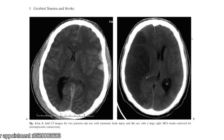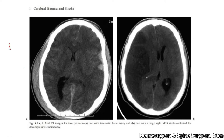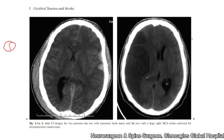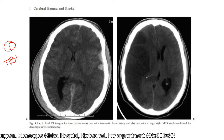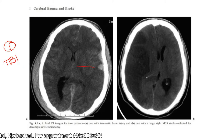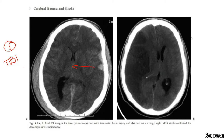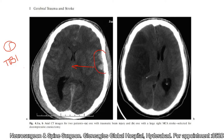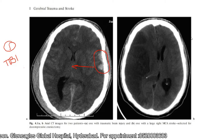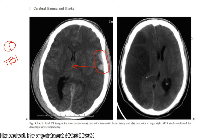There are two classical indications for decompressive craniectomy. The first indication is traumatic brain injury, where the midline shift is more than 0.5 mm, there are signs of uncal herniation, and there is obliteration of the basal cisterns. In this picture, you can see a traumatic brain injury with a small hemorrhage in the right frontal hemisphere, where the edema is out of proportion to the bleed and there is a midline shift to the opposite side.